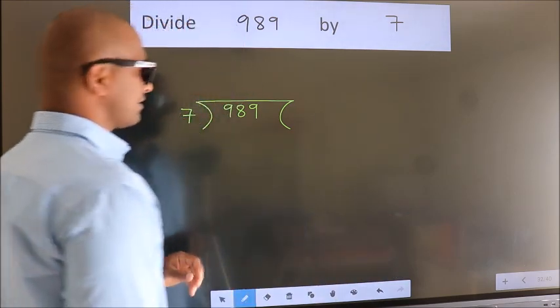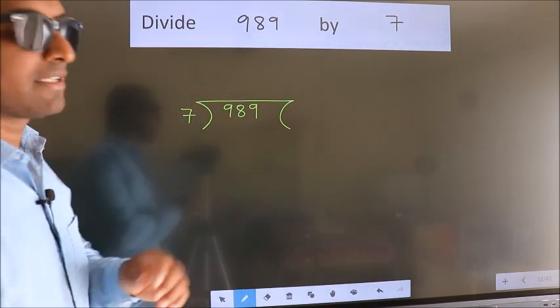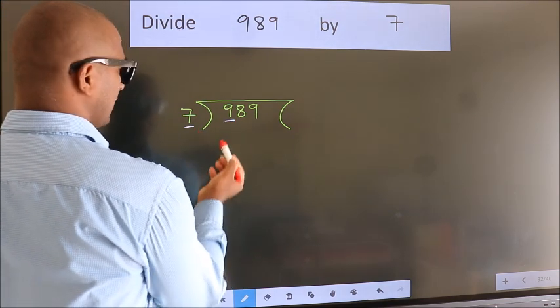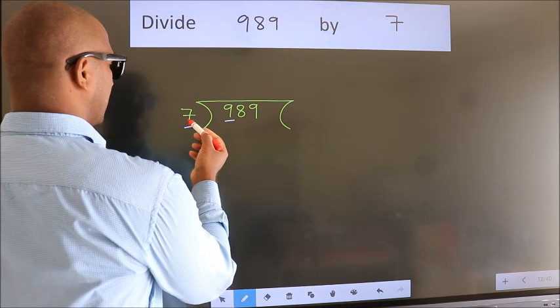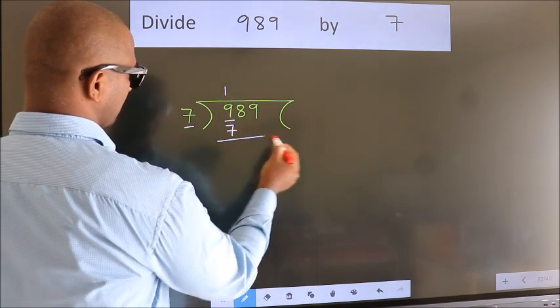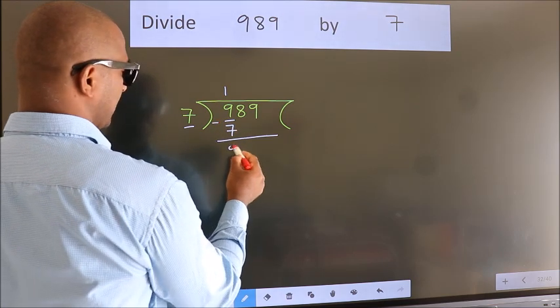This is your step 1. Next, here we have 9, here 7. A number close to 9 in 7 table is 7 once 7. Now, we should subtract. We get 2.